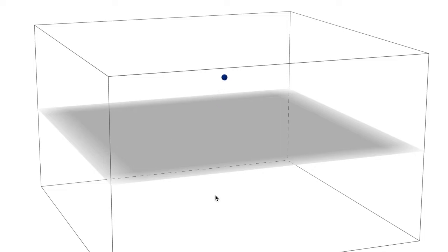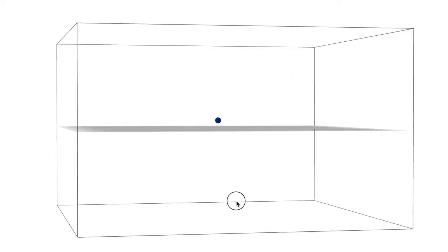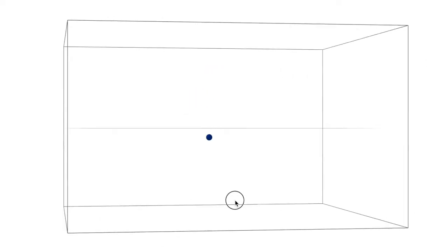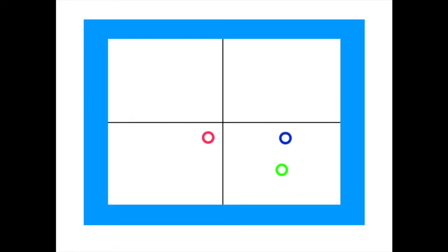To visualize this, let's first change our three-dimensional view to two dimensions, which can be done by removing the depth from the view. Let's consider three particles now. Einstein was talking about a large collection, but we will visualize his idea with a collection of three particles.